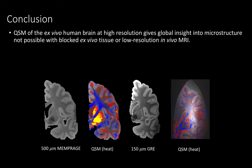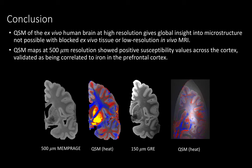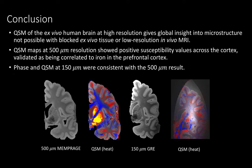In this work we presented preliminary results demonstrating that QSM of the ex vivo human brain at high resolution can give global insight into microstructure that's not possible with blocked ex vivo tissue or low-resolution in vivo MRI. QSM at 500 micron resolution showed positive susceptibility values across the cortex that we were able to validate as being correlated to iron in the prefrontal cortex. We also demonstrated that phase and QSM at 150 micron were consistent with the 500 micron result.